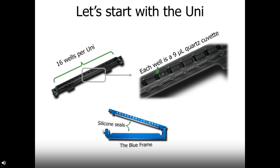The secret sauce of UNCLE is the UNI — an anodized aluminum frame with 16 quartz cuvettes, where each quartz cuvette holds 9 microliters of sample. You just pipette in your sample and seal the UNI inside of its blue frame so silicon seals clip around those little cuvettes. Just like that, you have a nicely sealed sample where you don't have to worry about evaporation over long periods of time or over a thermal ramp. You can pop it into a 37-degree incubator and do a weeks- or months-long stability experiment right in the UNI, or put it into a freezer and go through freeze-thaw cycles also right in that UNI.